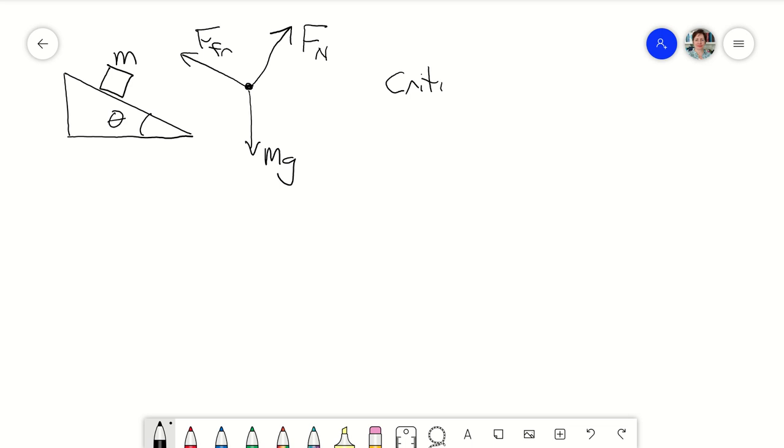So for a critical angle, say theta subcritical, the force of friction is μs times the normal force. So when that's true, that means that when we choose axes, say x and y,